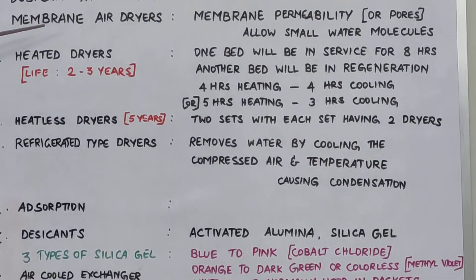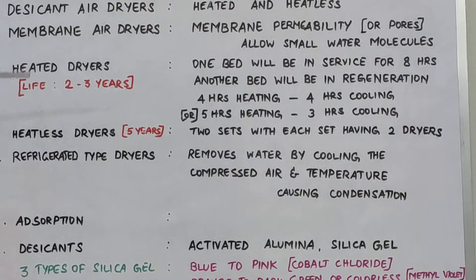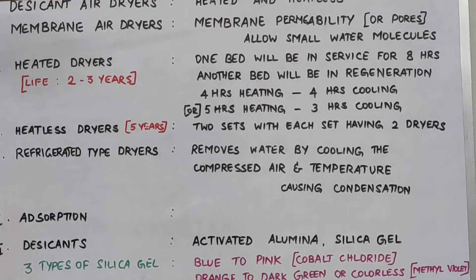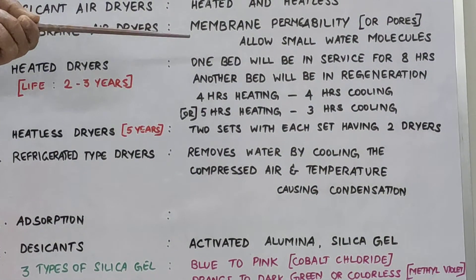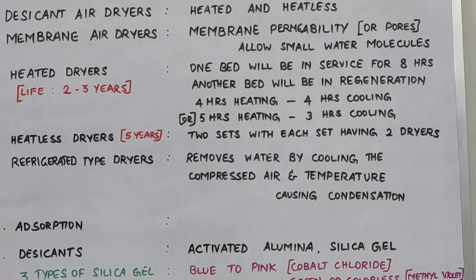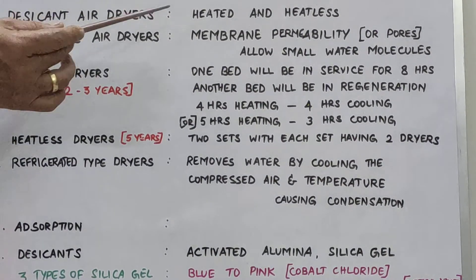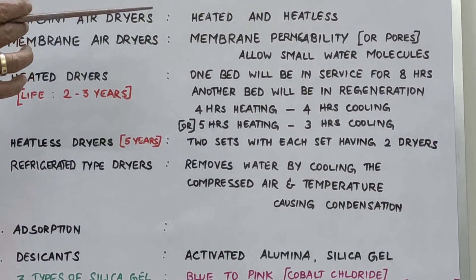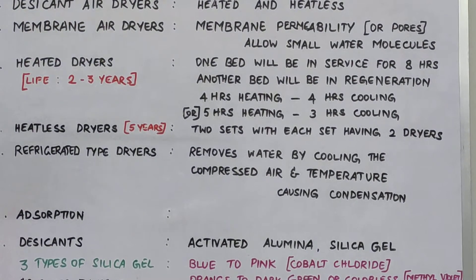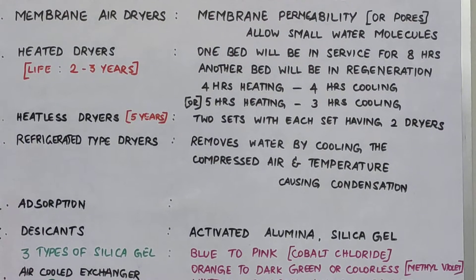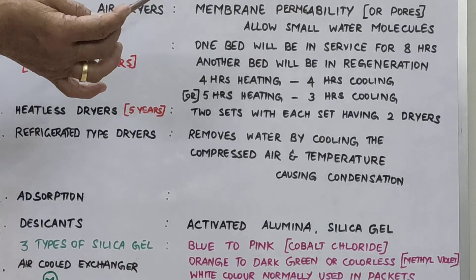Another type of dryer is the membrane type, which is commonly used in offshore and marine applications. The membrane uses permeability to allow small water vapor particles to pass through the membrane wall, while larger molecules of nitrogen and oxygen do not pass through and exit the unit as dry air. The membrane is a hollow membrane tube, and the water particles collected outside the tube in the chamber are purged using recirculated dry air.